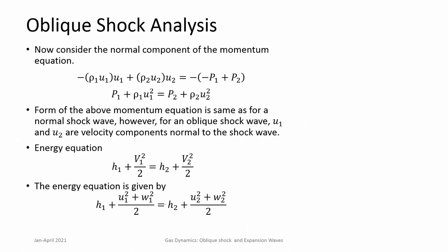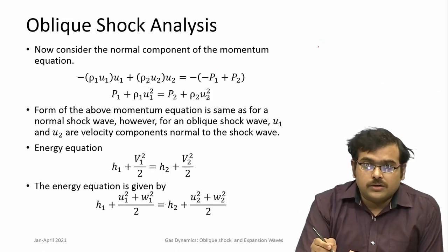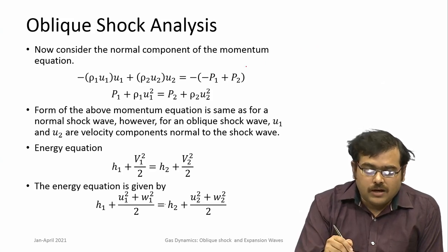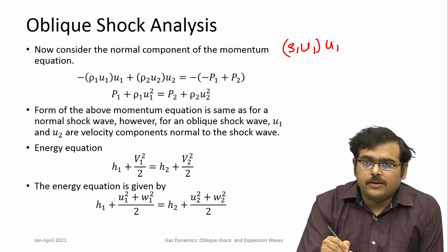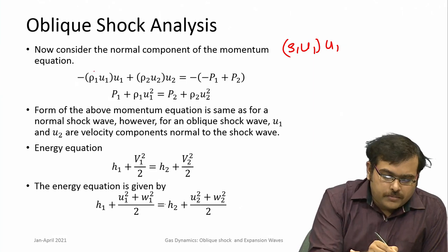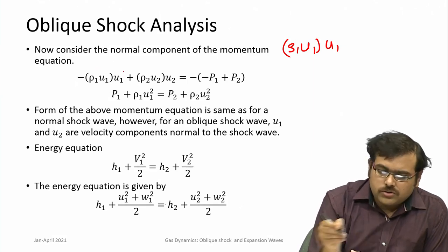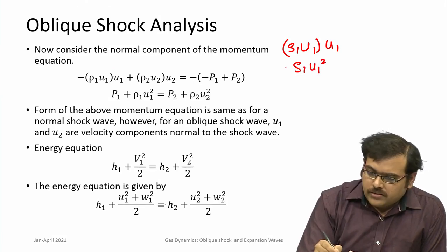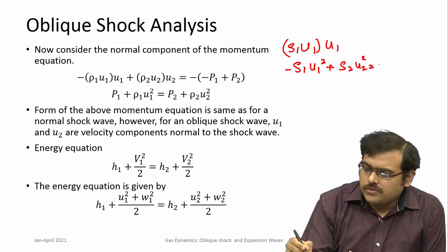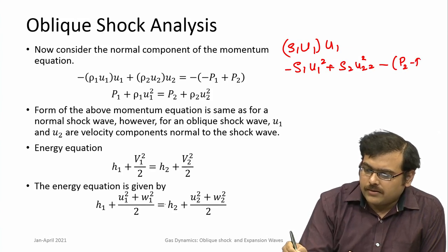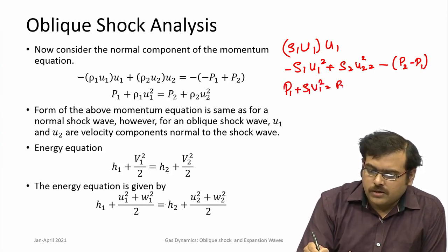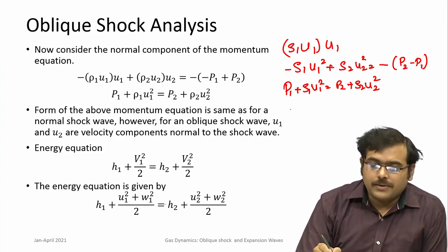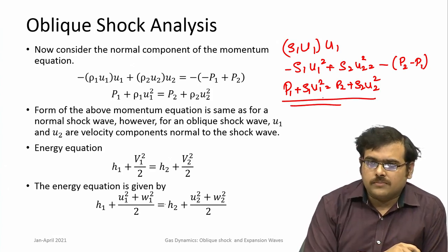For the normal direction, there is a pressure force: P₁ before and P₂ after the oblique shock. The momentum flux in the normal direction is ρ₁U₁² entering and ρ₂U₂² leaving. Balancing these with the pressure forces gives: P₁ + ρ₁U₁² = P₂ + ρ₂U₂². This is momentum conservation for the normal component across the oblique shock.